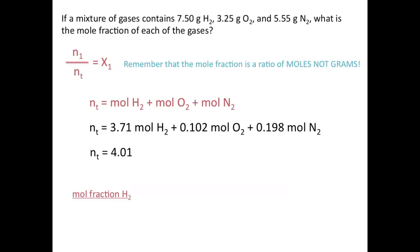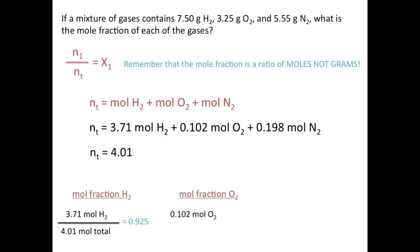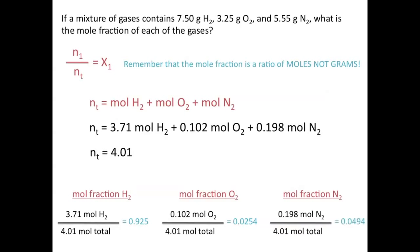Now to calculate the mole fractions, we take the moles of each individual gas divided by the total number of moles. The mole fraction of H2 in this mixture is 0.925. The mole fraction of O2 is 0.0426 divided by 4.01, which equals 0.0254. And the mole fraction of N2 is equal to the moles of N2 divided by the total number of moles, which equals 0.0494.